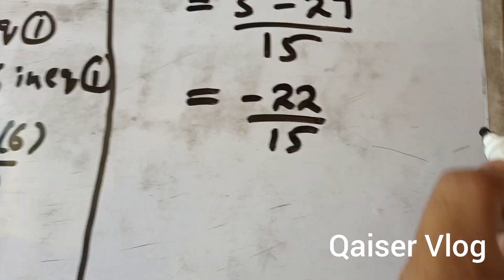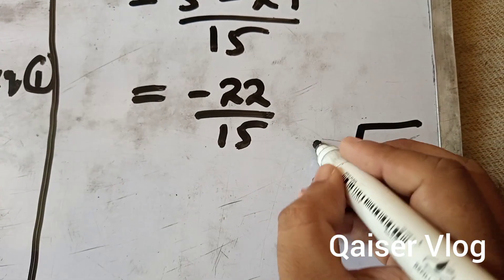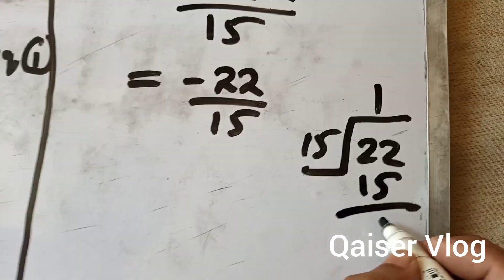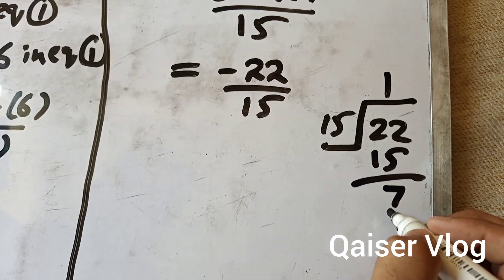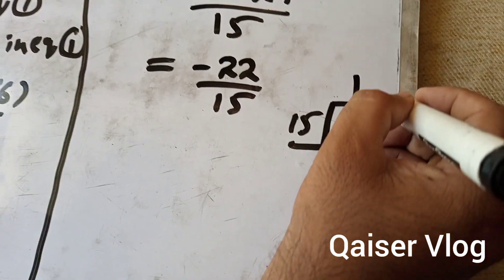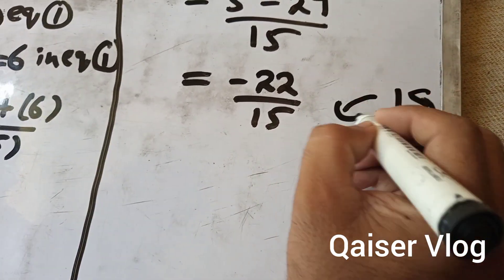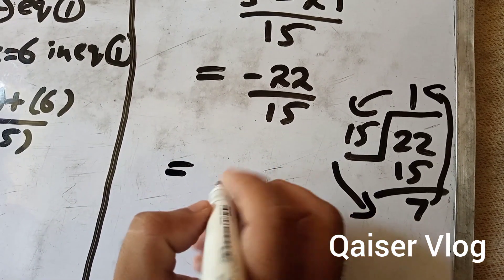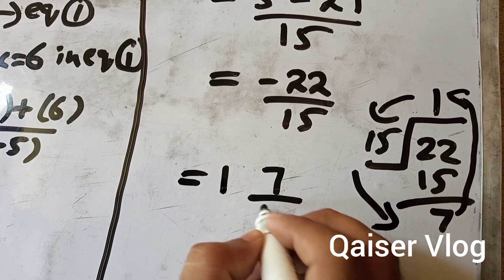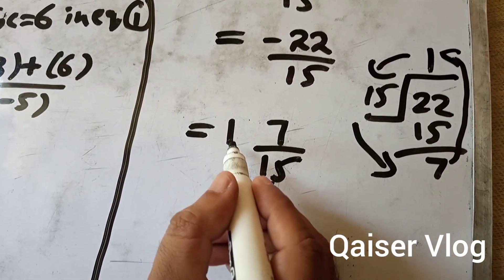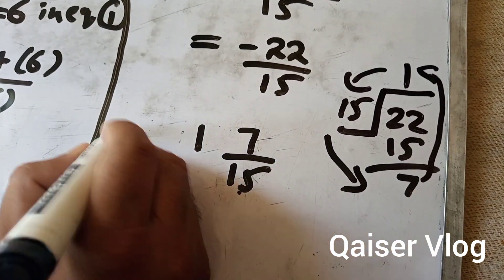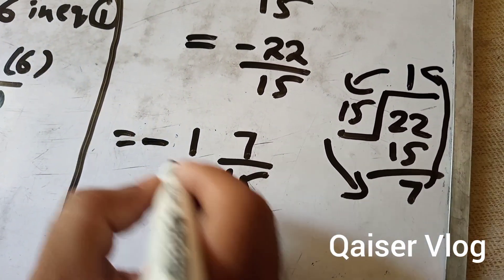So the result is -22/15. This is also a valid answer, but you can further simplify: 15 goes into 22 once with remainder 7. So the answer can be written as -1 and 7/15. We verify: 15 multiplied by 1 is 15, and 15 plus 7 is 22. So -1 7/15 is the final answer.